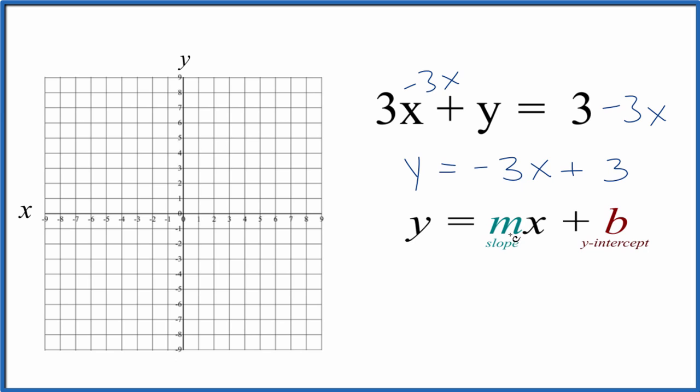We have our slope negative 3, and then we have our y-intercept. That's 3. So to graph the equation 3x plus y equals 3, our y-intercept, that's 3. So we go to the y-axis, we find 3, and that's where we're going to intercept the y-axis.